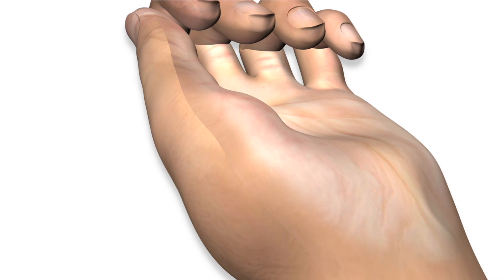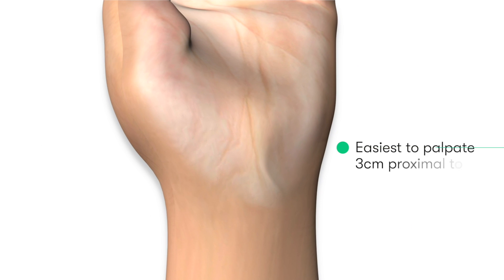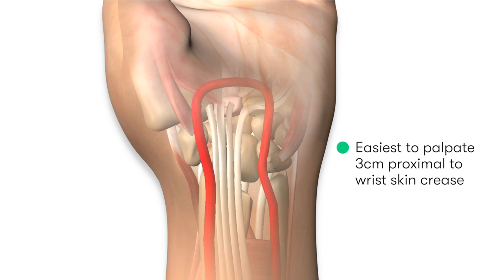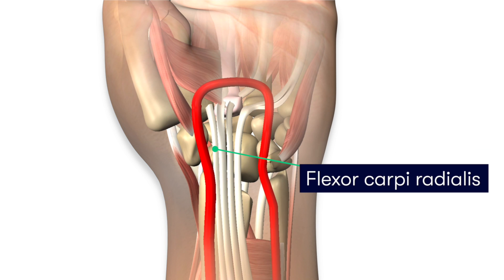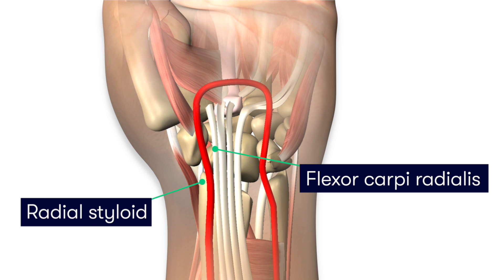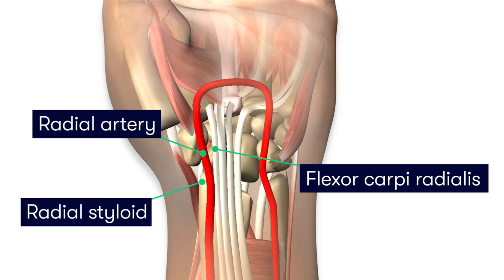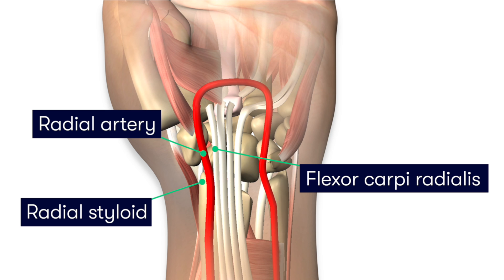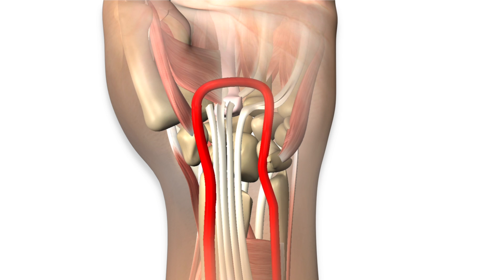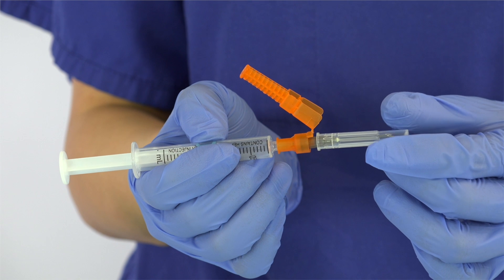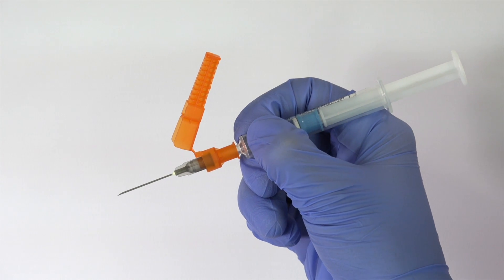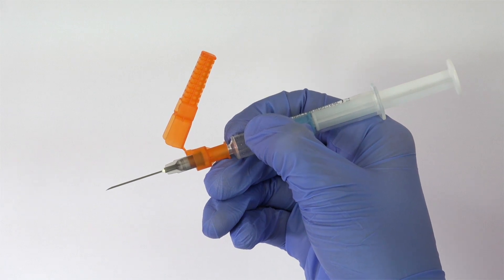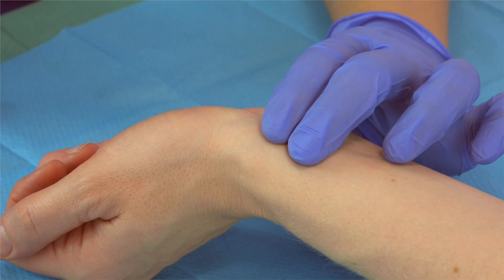In most cases, the radial artery is easiest to locate and access approximately 3cm proximal to the skin crease of the wrist on the ventral surface, lateral to the flexor carpi radialis tendon, and medial to the radial styloid process. When feeling the artery, try to visualise its course underneath the skin. Now that we are happy that we know the exact location where we want to insert the needle, we can unsheathe the needle and hold the ABG needle and syringe between our thumb, index finger and middle finger, similar to as you would hold a pen.